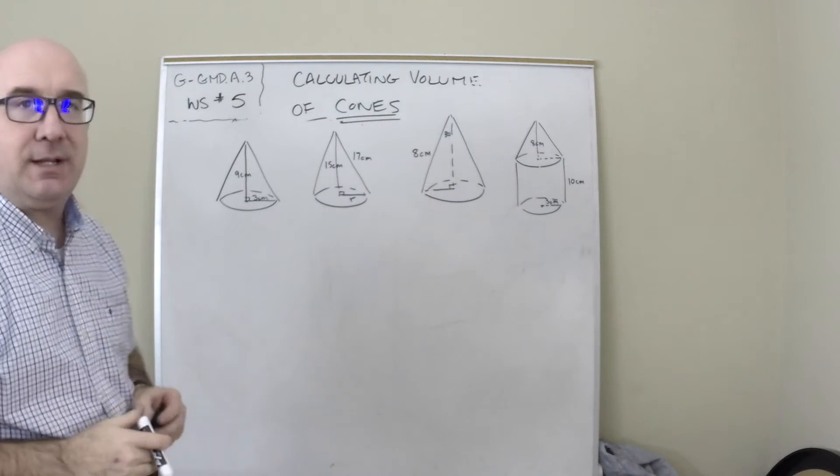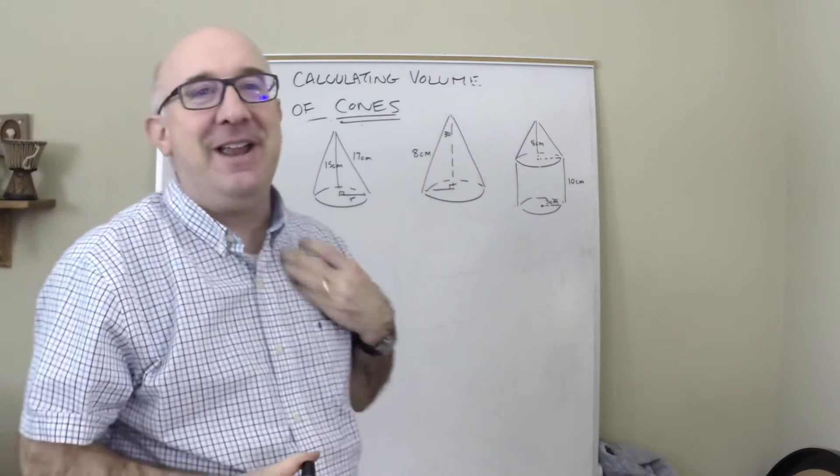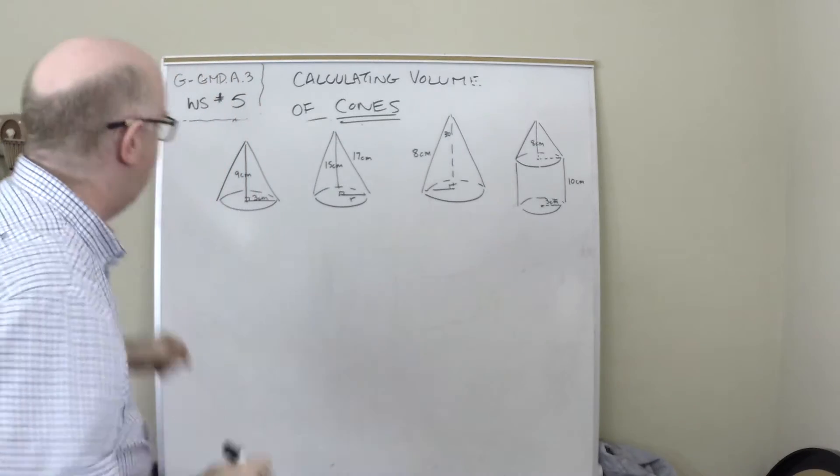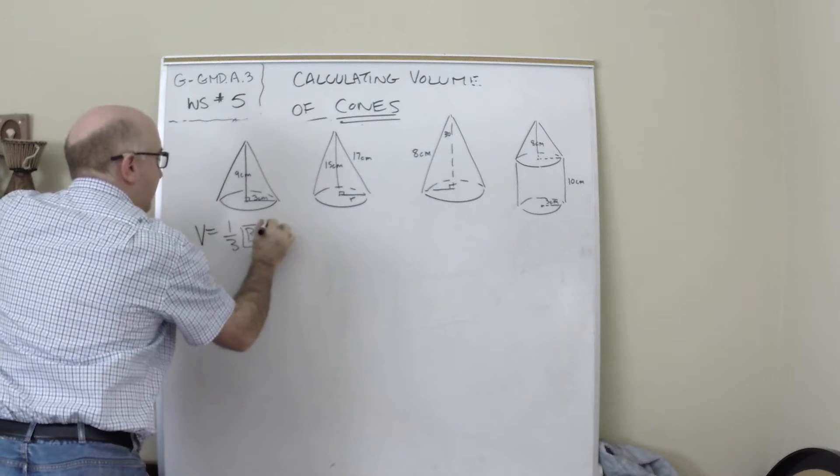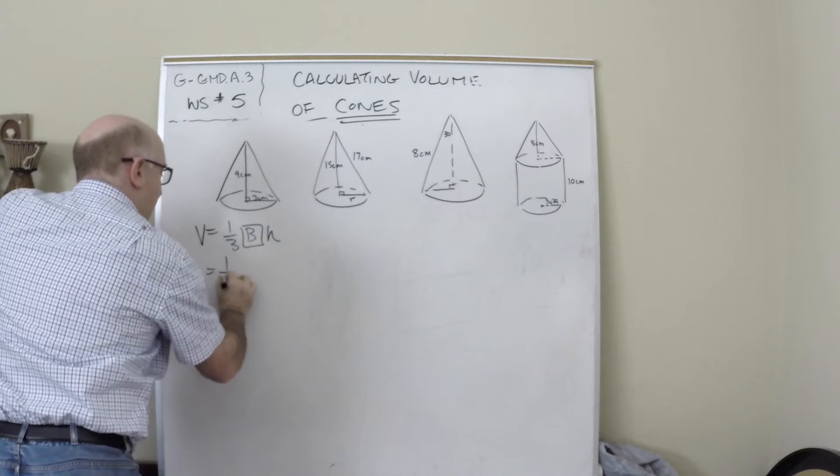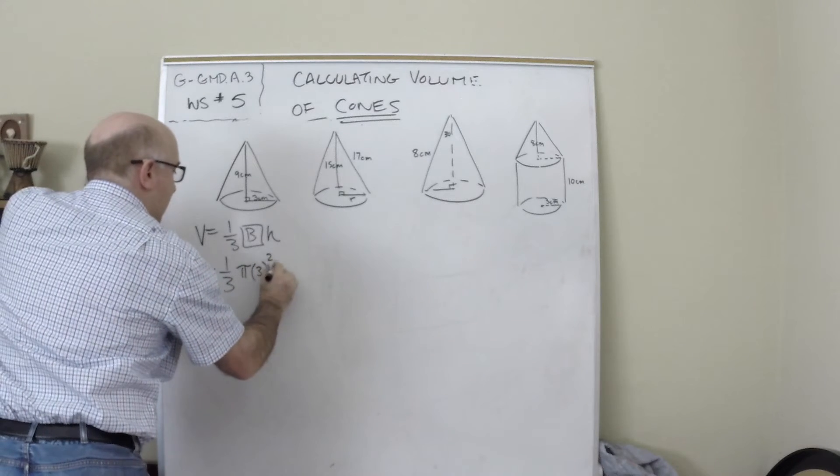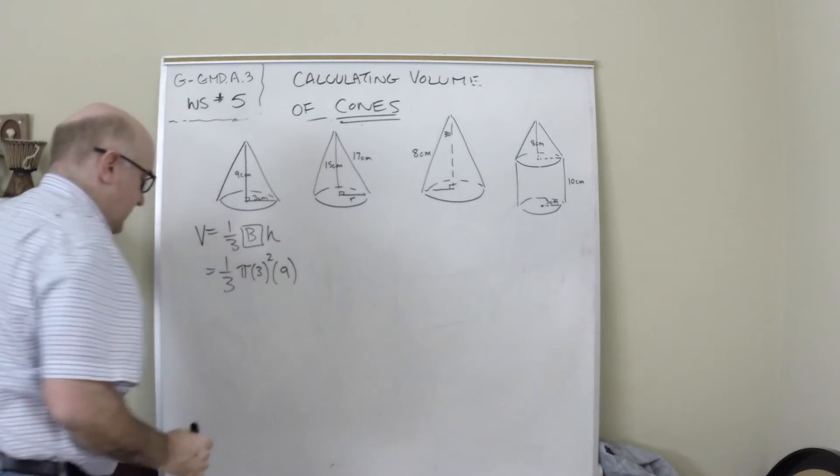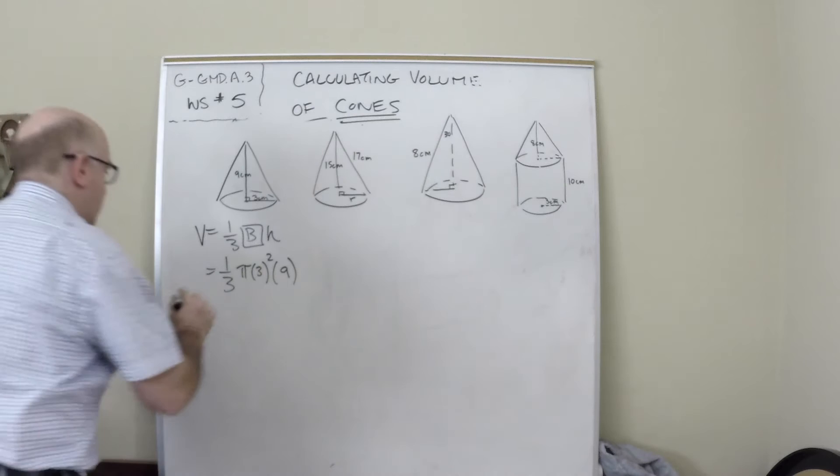Let's just go through these, much easier than our pyramid friends because the bases are so much simpler. Volume is one-third B, area of the base times the height, one-third of πr²h. Now isn't this nice? Look how clean that is. We get, it looks like 27π centimeters cubed, nicely done there.